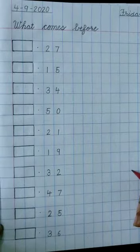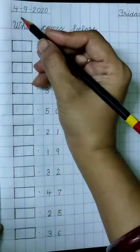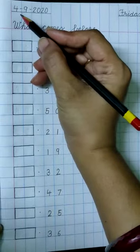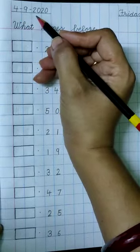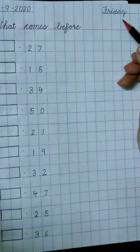Now we will do work in our math copy number 2. So first write the date here and today's date is 4-9-2020, 4th September and today is Friday.